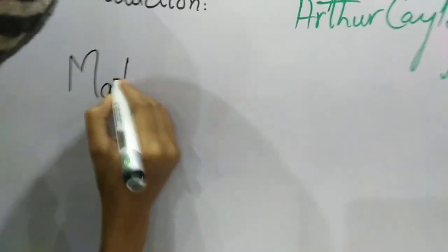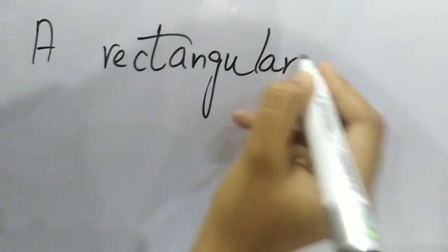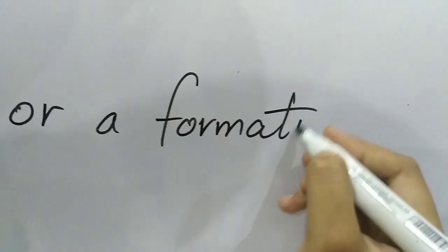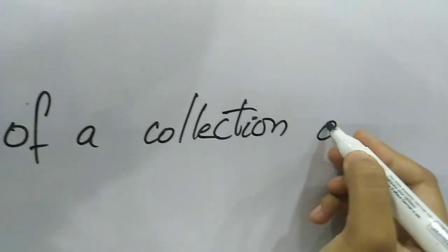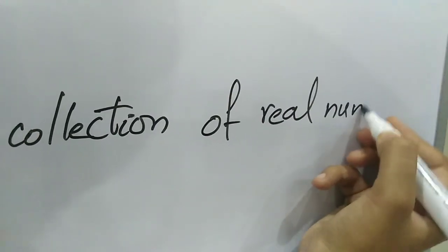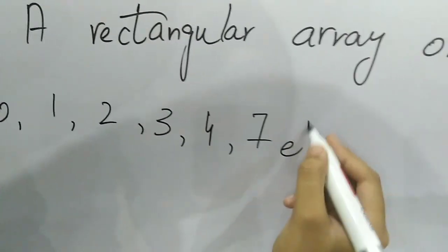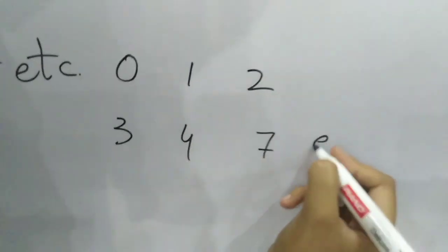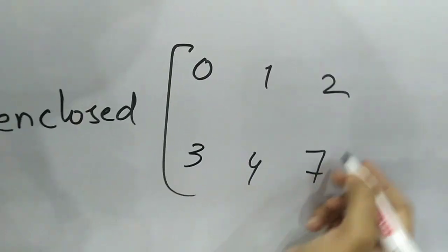A matrix is a rectangular array or formation — a collection of real numbers. For example, the numbers 0, 1, 2, 3, 4, and 7: when they are simply written as 0, 1, 2, 3, 4, and 7, they are not a matrix. But when enclosed by square brackets, they are called a matrix.